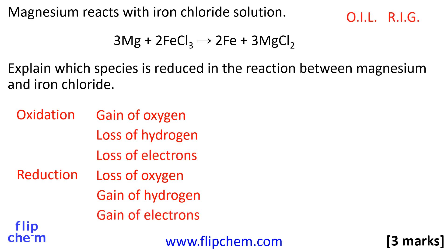The latest definitions for oxidation and reduction relate to electrons. OIL RIG is often used to remember these definitions: Oxidation Is Loss of electrons, Reduction Is Gain of electrons.